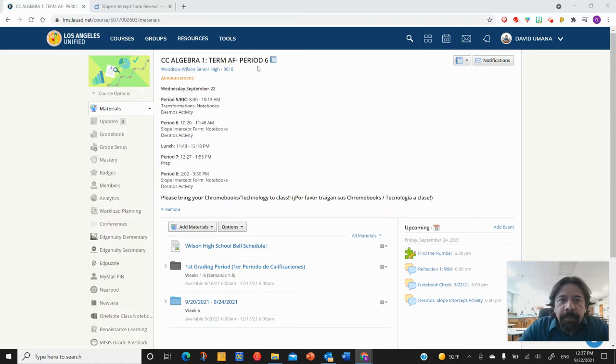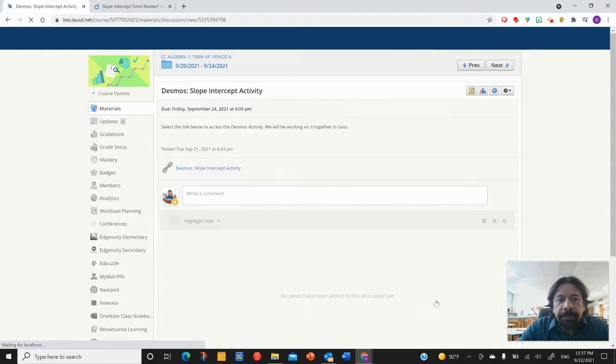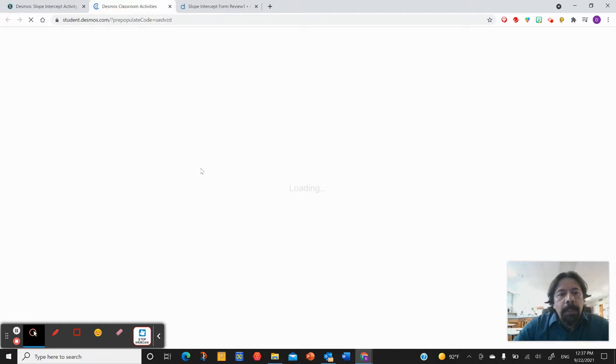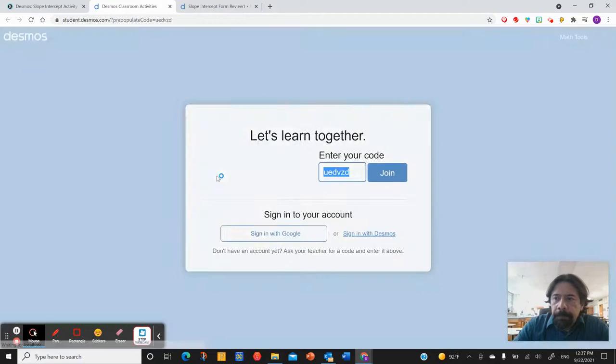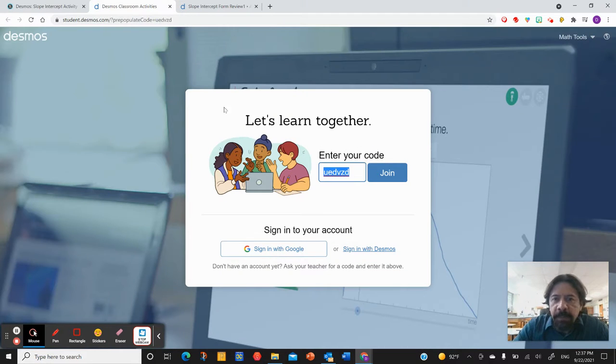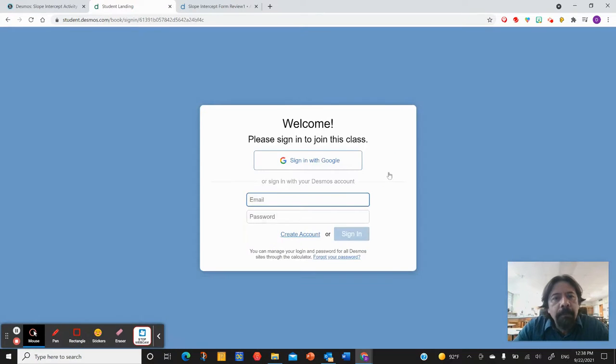The first thing I'm going to do is on my period 6, I'm going to click on this one. As I select it, I'll select this link. And as I select the link, I'm just going to join. When I join, I'm going to sign in with Google.